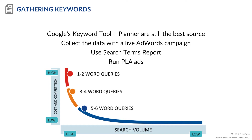Many of those keywords will be long-tail keywords. And as you can see from this graph, it is easier to rank for a search query that has more words in it because the search query is usually less competitive.